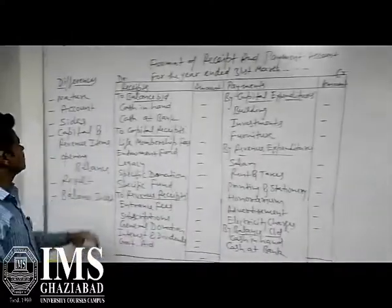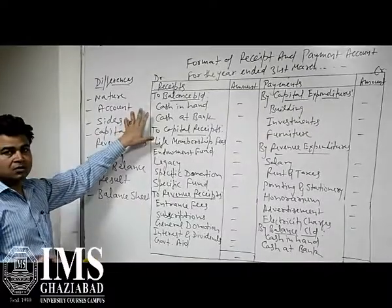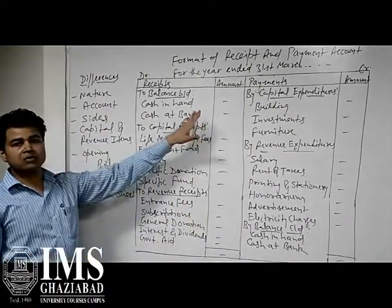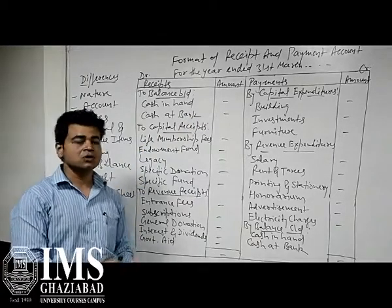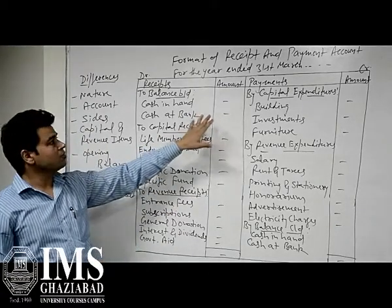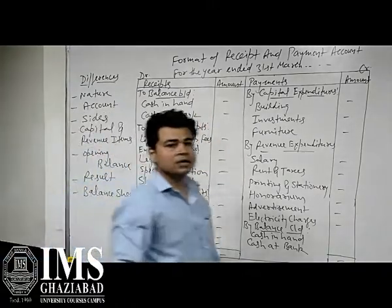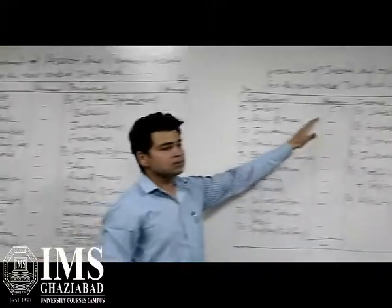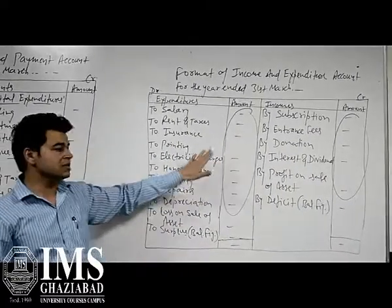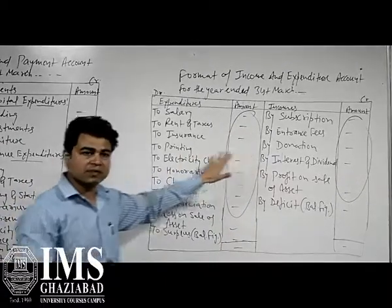The second point of difference is the type of account. Based on the golden rules of accounting, since the Receipts and Payment Account is very similar to a cash book, it is an example of a real account. And since the Income and Expenditure Account is very similar to a trading and P&L account, it is an example of a nominal account.